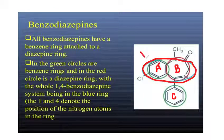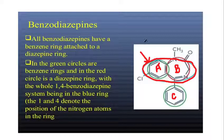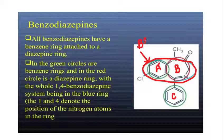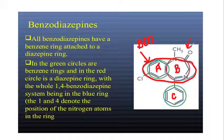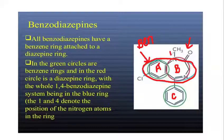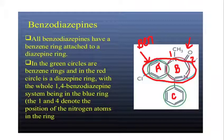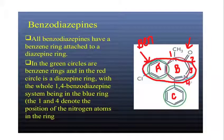Ring A is the benzene ring, visible in green on the original slide. If you understand the structure like this, you can draw it and label it easily. Ring A is benzene, Ring B is the diazepine ring. We then check which positions have nitrogen.